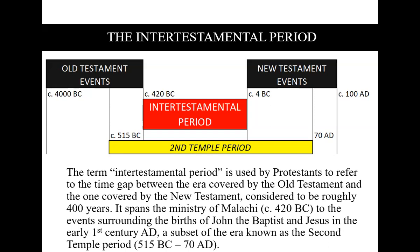That 400 years: the Old Testament ended with the ministry of Malachi, which is about 420 BC, and the New Testament begins with events around the births of John the Baptist and Jesus. That's your intertestamental period. Sometimes people also talk about the Second Temple period, which is approximately the same thing — it was first rebuilt by Zerubbabel, and then Herod refurbished it.